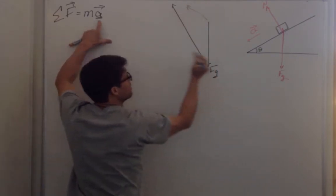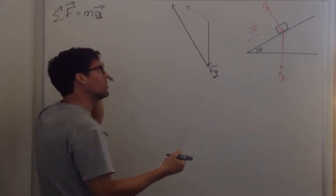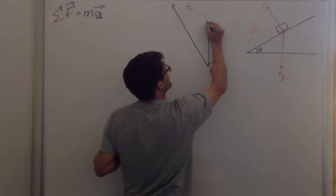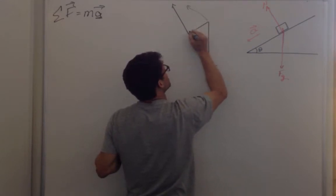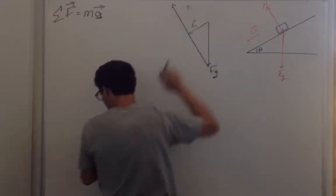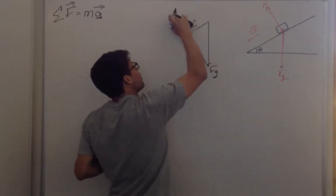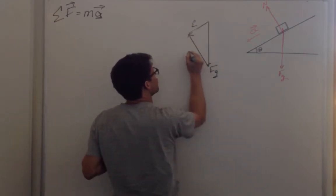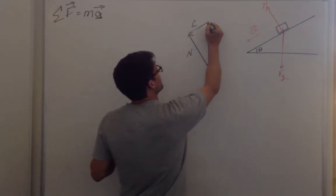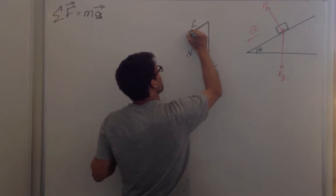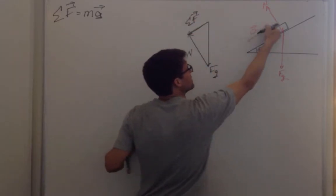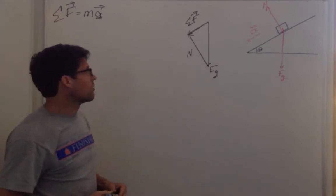The force of gravity straight down plus the normal force perpendicular to the surface are the two forces, and they have to add to give the sum of the forces. When I add these two vectors, they have to sum in the same direction as the acceleration — down the slope. So I can see this has to be the direction of the sum of the forces, which means I made the normal force way too big. Now I've got the normal force and the force of gravity, and their vector sum is in the same direction as the acceleration.